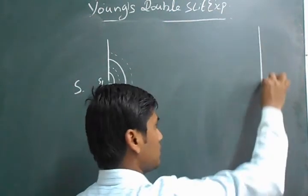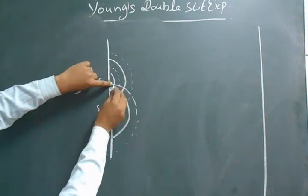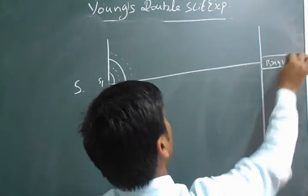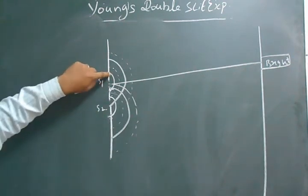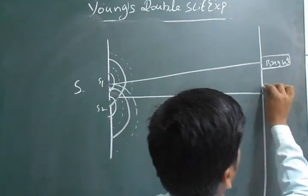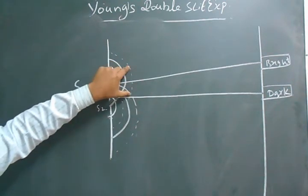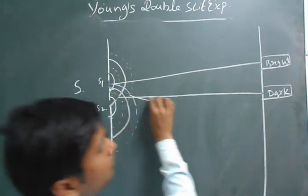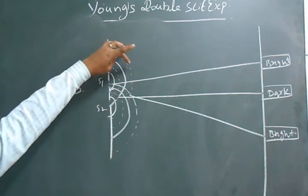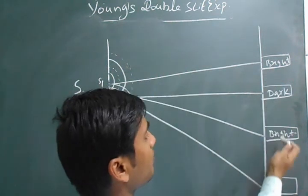This pattern is observed on the screen. When the crest of the first wave superimposes with the crest of the second wave, that point always forms a bright fringe. When the crest of the first wave superimposes with the trough of the second wave, that point is observed as dark. The pattern is observed alternately: bright, dark, bright, and again dark.